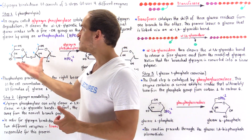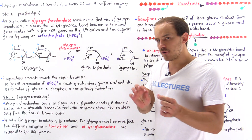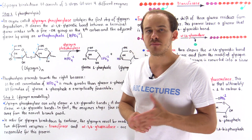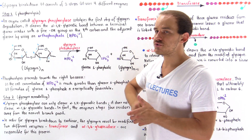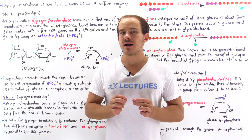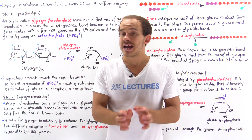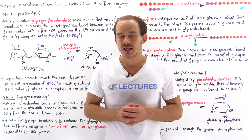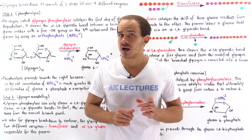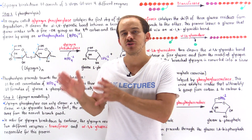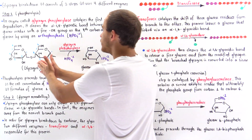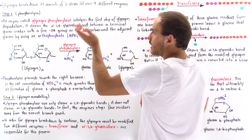The first step of glycogen breakdown is known as phosphorolysis, and this process is catalyzed by an enzyme known as glycogen phosphorylase. Glycogen phosphorylase uses an orthophosphate molecule to cleave an alpha-1,4 glycosidic bond between a terminal glucose molecule that contains a free hydroxyl group on the fourth carbon and the adjacent glucose molecule. This can be seen in the following picture.